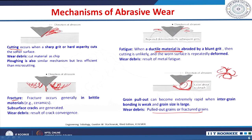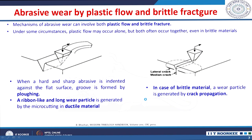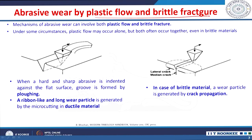There are 2 different types of material removal in abrasive wear: by plastic flow or by brittle fracture, depending on the material being abraded. Under certain circumstances plastic flow may occur alone, but generally both occur together even in brittle materials — even ceramics exhibit some plastic flow alongside brittle fracture.